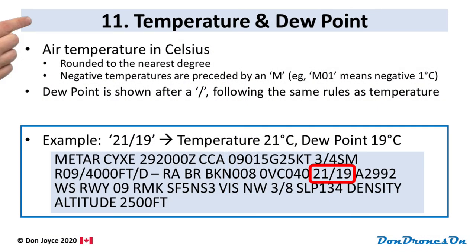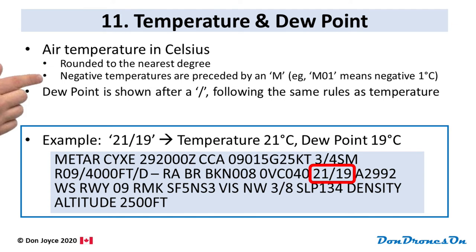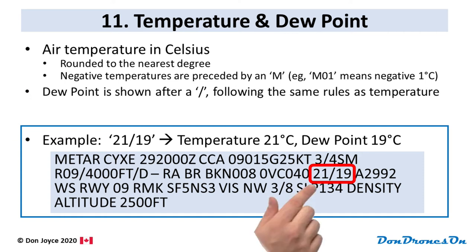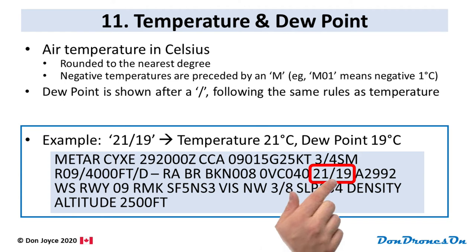The next group is an easy one — temperature and dew point. The air temperature is listed first in degrees Celsius, rounded to the nearest degree. The only trick is that if it's a negative temperature, instead of a minus sign it's preceded by the letter M. So M01 means negative one degree Celsius. The dew point is shown after a slash, also in degrees Celsius with M for negative. In our example, the air temperature is 21°C and the dew point is 19.